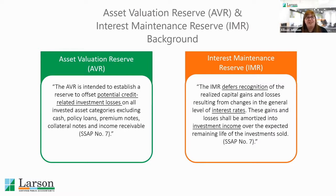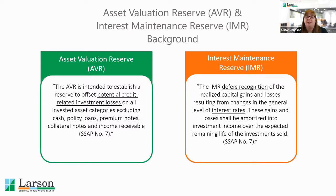The first item is the Asset Valuation Reserve. This is a liability that's required to be established, and the intent is to offset potential credit-related investment losses. If somebody's issued a bond and that company were to go bankrupt or go under, this reserve is meant to help offset that potential loss.